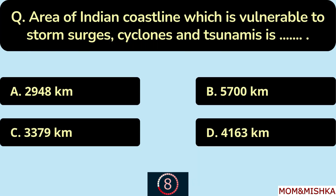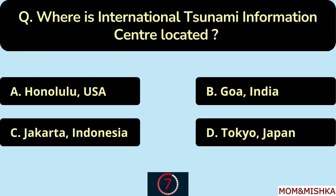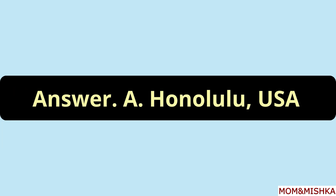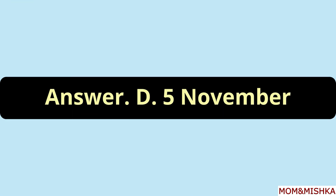The area of Indian coastline vulnerable to storm surges, cyclones, and tsunamis is 5,700 km — option B. The International Tsunami Information Center is located in Honolulu, USA — option A. World Tsunami Awareness Day is observed on 5th November every year — option D.